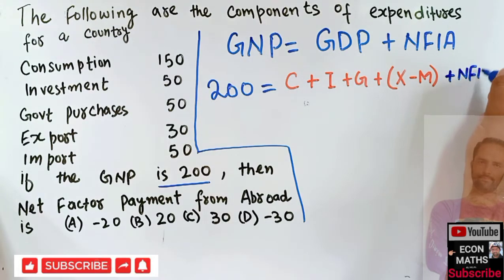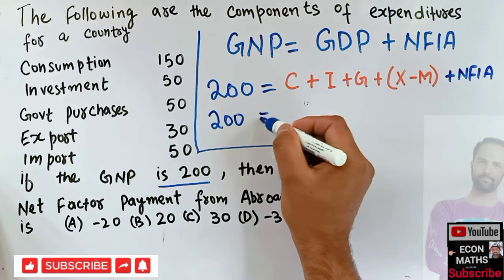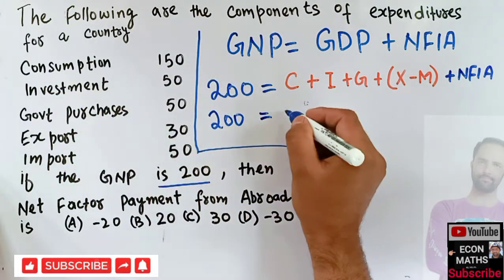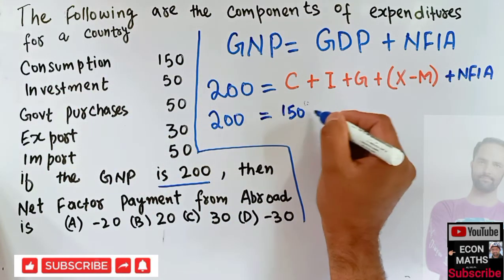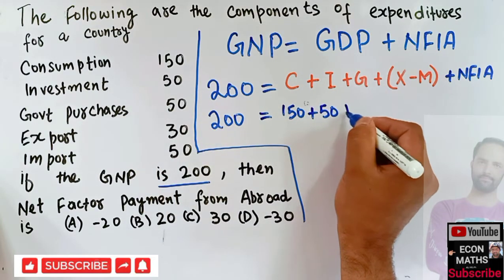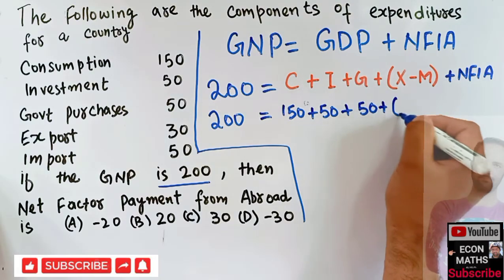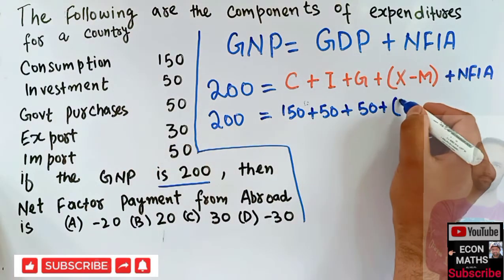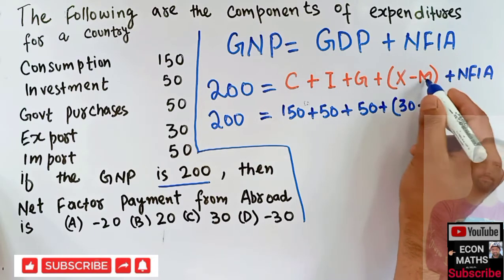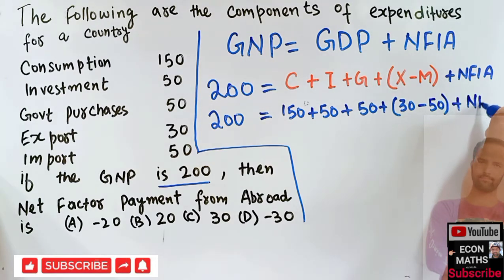So we have 200 is GNP, should be equal to—what is our consumption expenditure? That is 150. Investment expenditure is 50, government purchases is 50, plus export is 30, minus the import is 50, plus NFI that we need to find out.